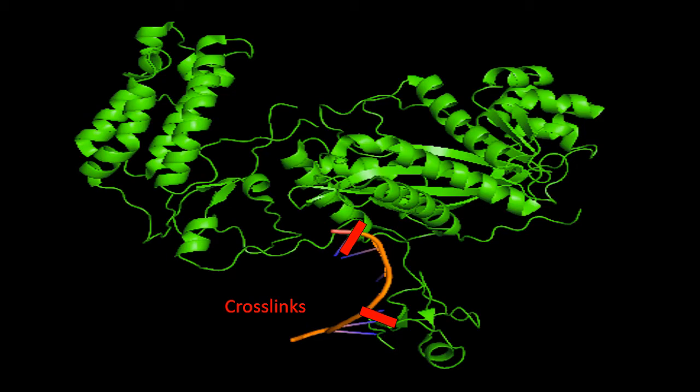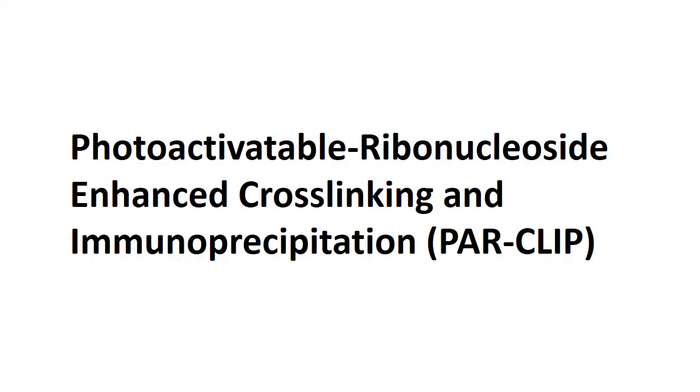However, simple UV crosslinking doesn't allow you to determine specifics such as where an RNA and a protein are interacting. A more recent biochemical method can provide more information about the interaction between an RNA and a protein. Photoactivable ribonucleoside enhanced crosslinking and immunoprecipitation, or PARCLIP, is such a method.